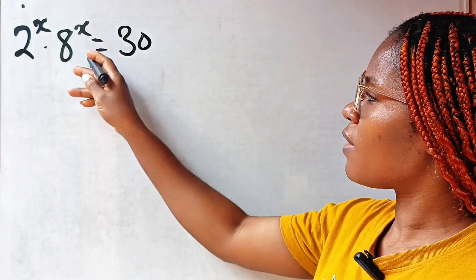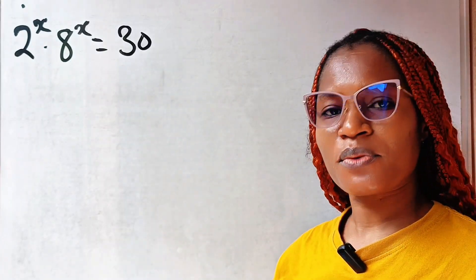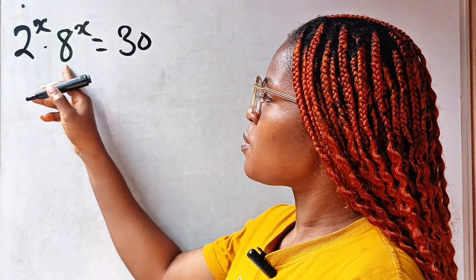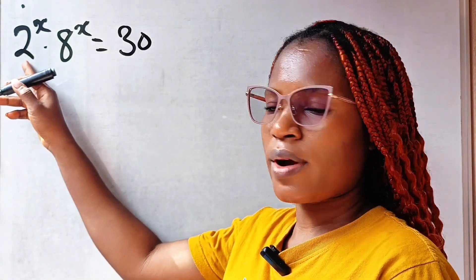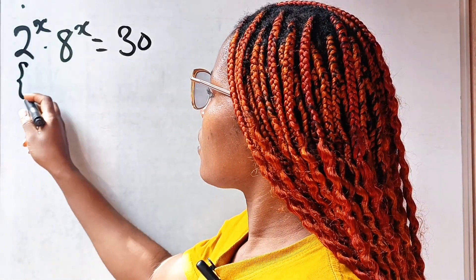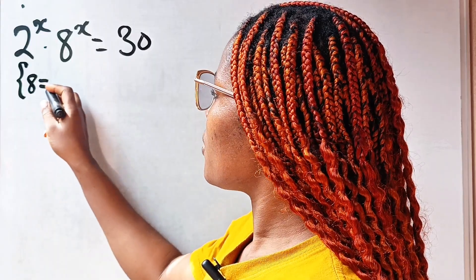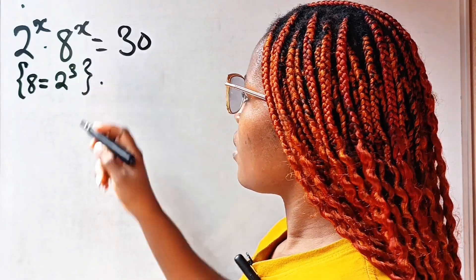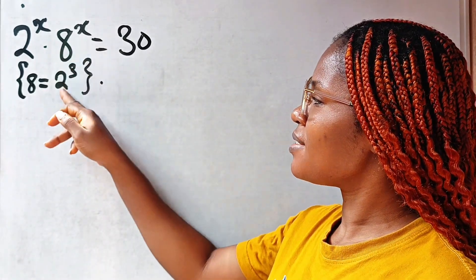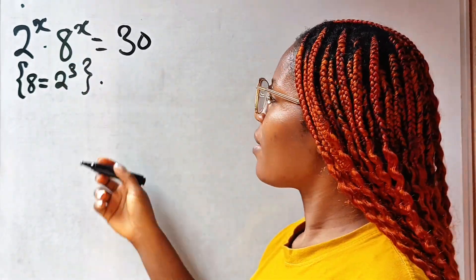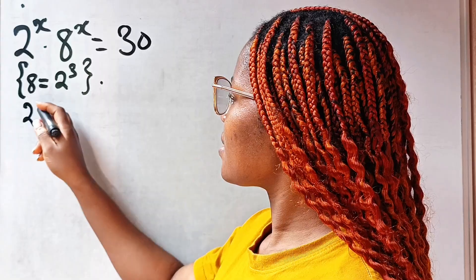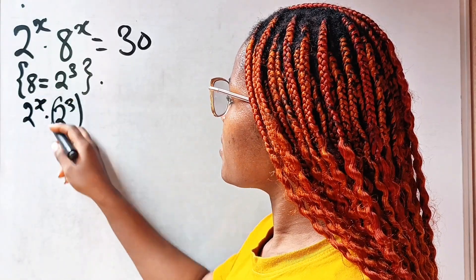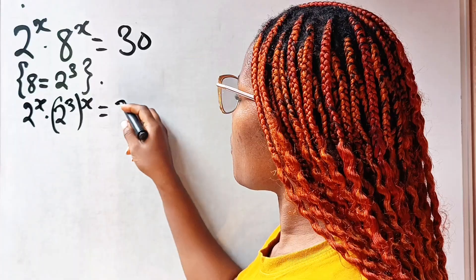We are asked to solve for the value of x in this particular equation. First things first, we need to notice that we can express it in base 2. Recall that 8 can be written as 2 to the power of 3. Let's go ahead and replace this. So we now have 2 to the power of x multiplied by 2 to the power of 3, raised to the power of x, is equal to 30.